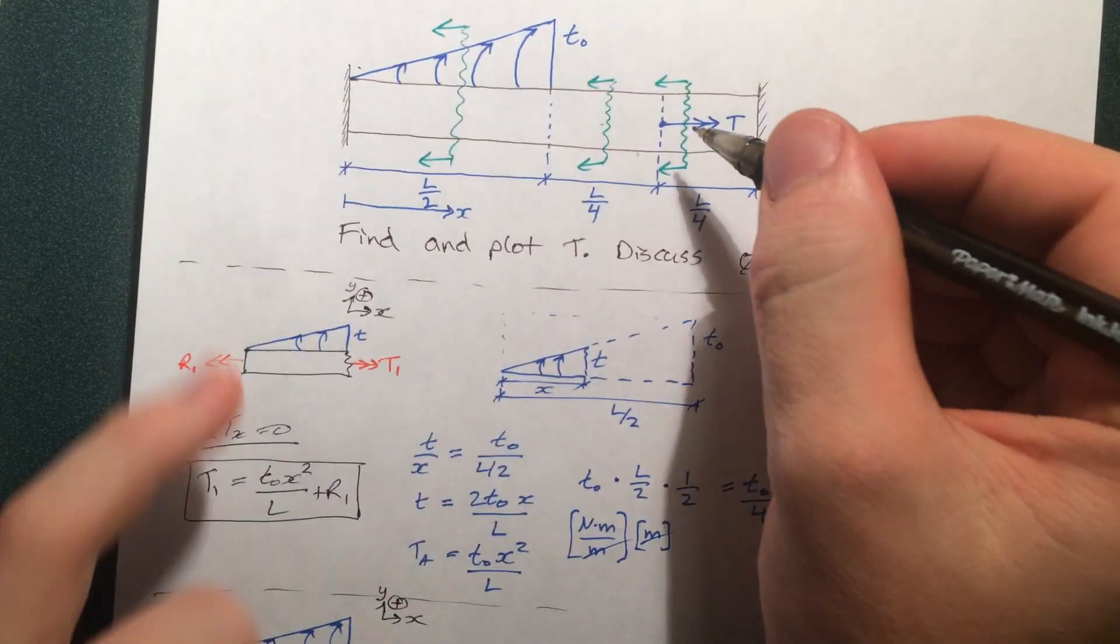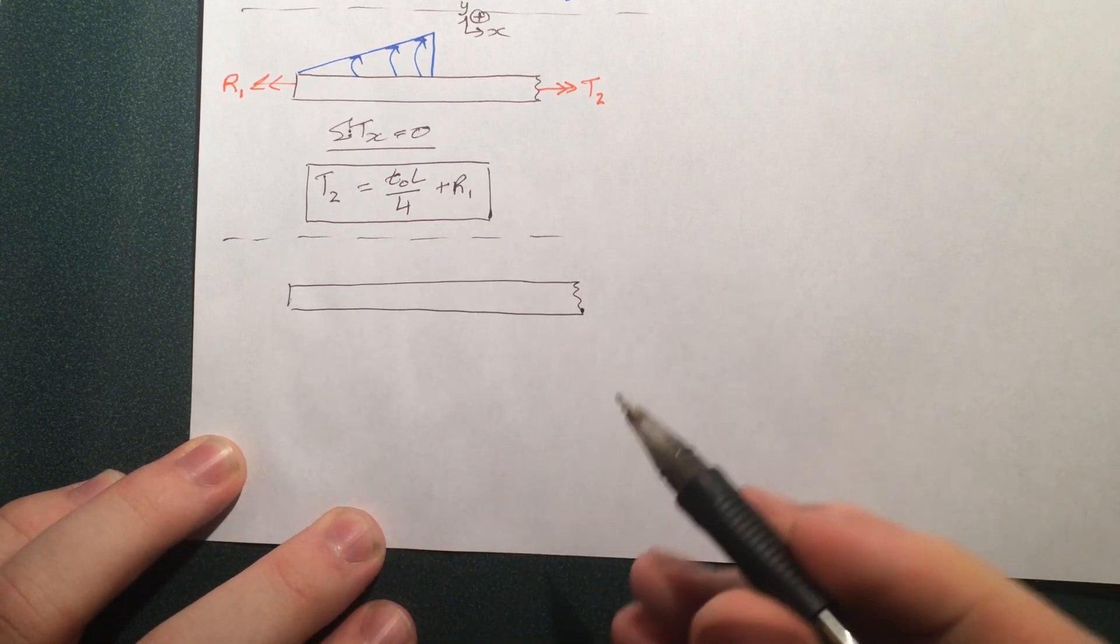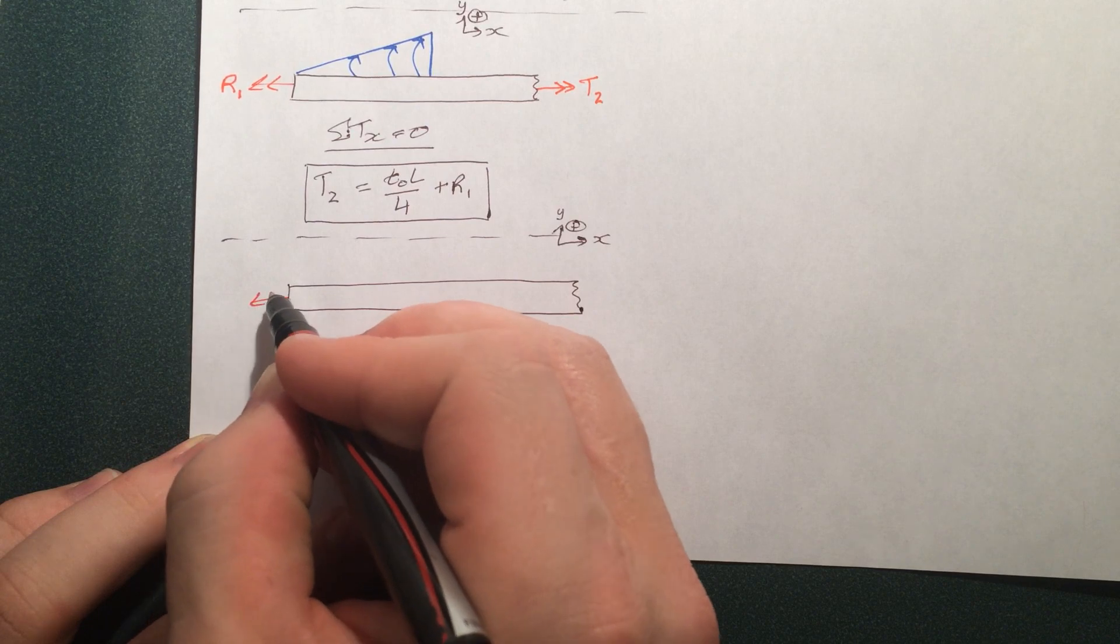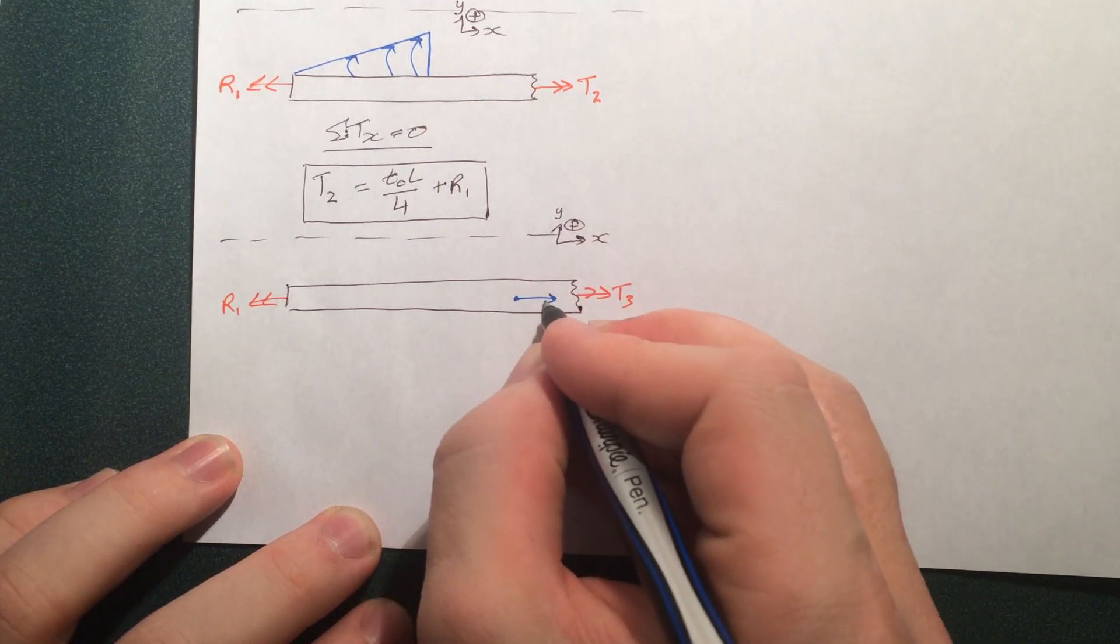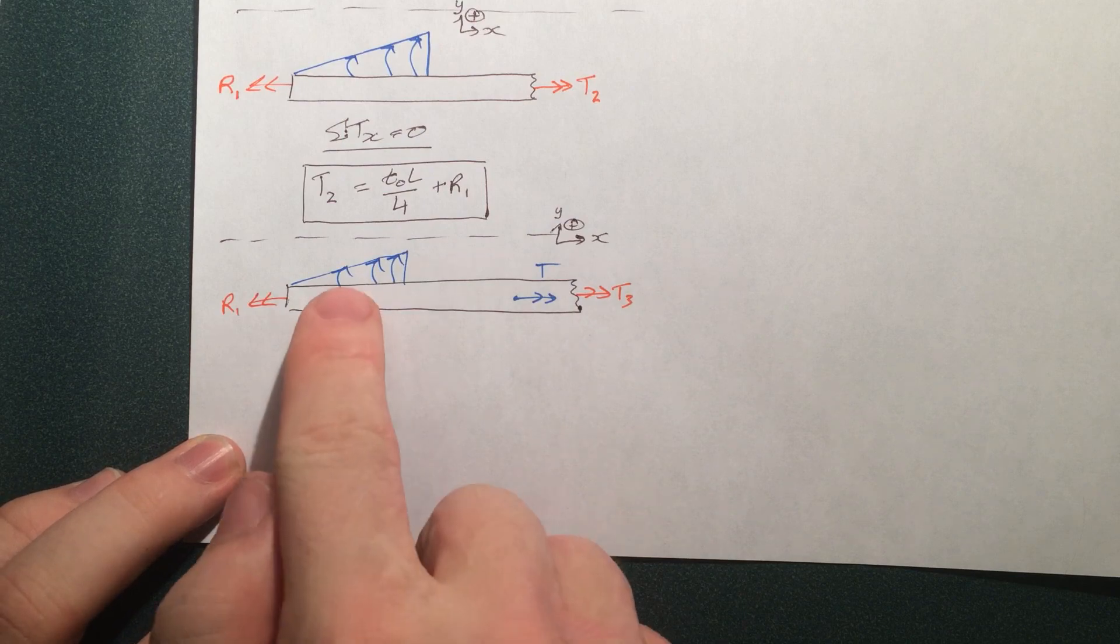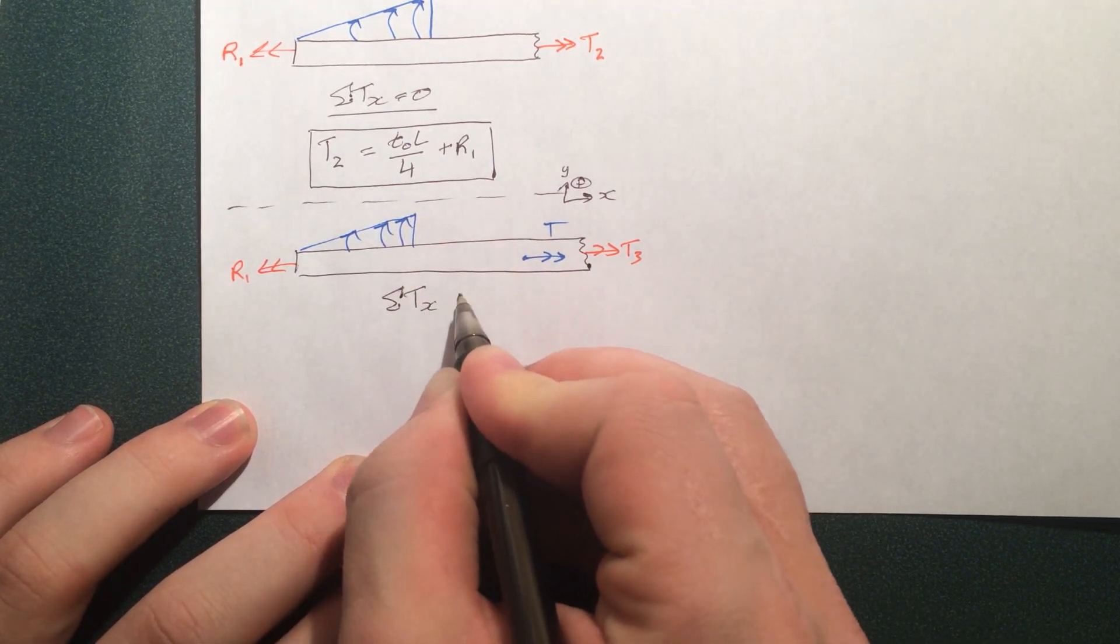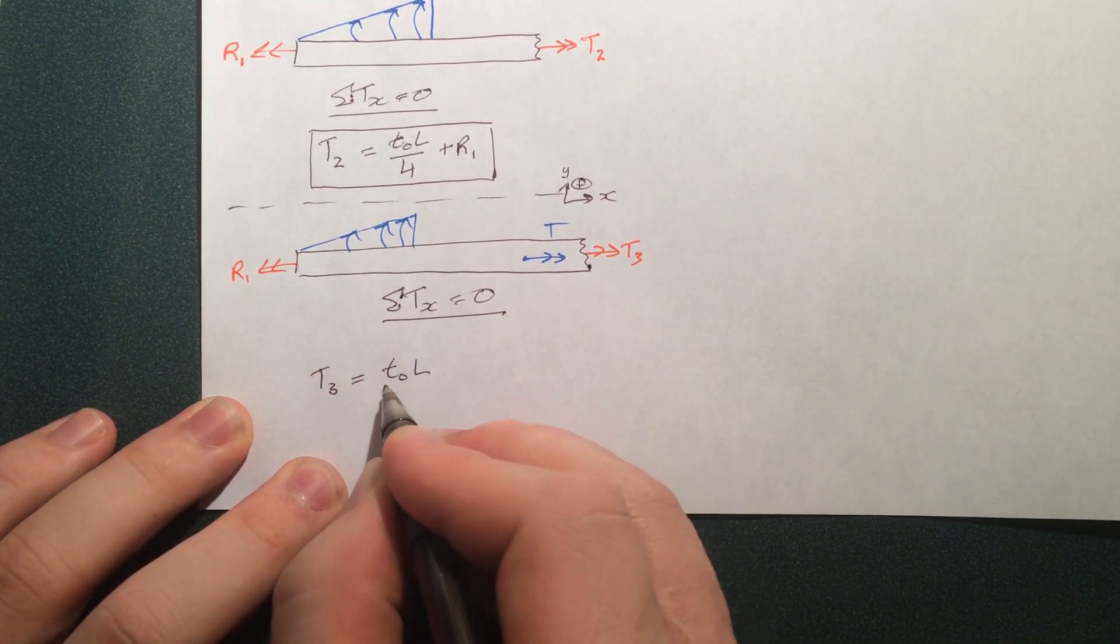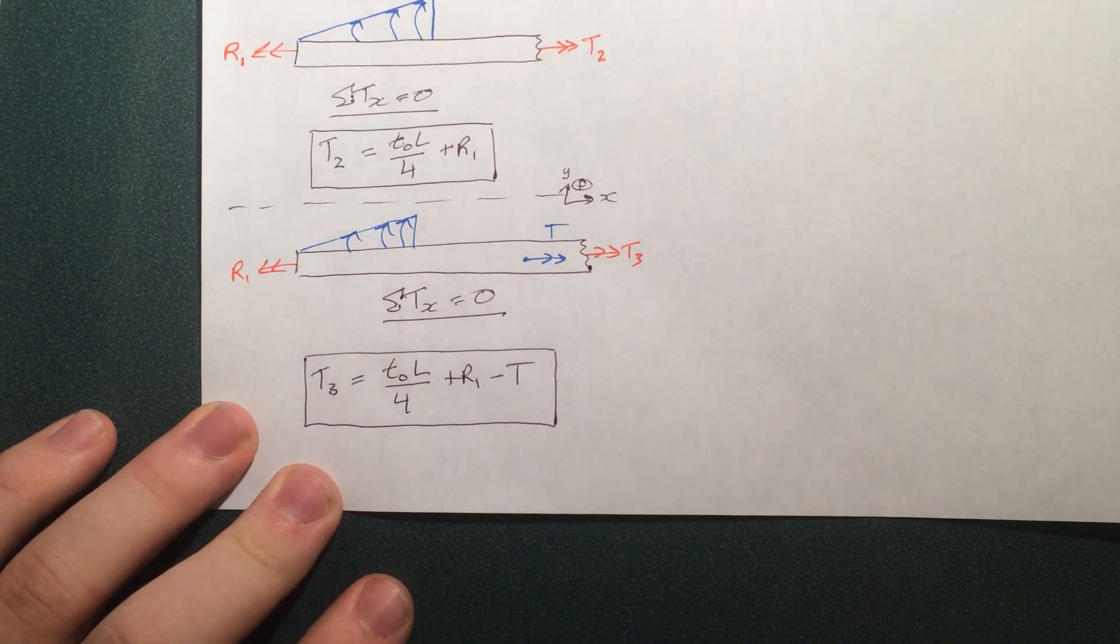So for T3, we'll make a free body diagram of this piece. Now like we said before, the magnitude of this bit of torque is T0L by 4. So if we sum up the torques, there we go.